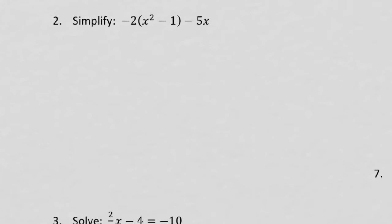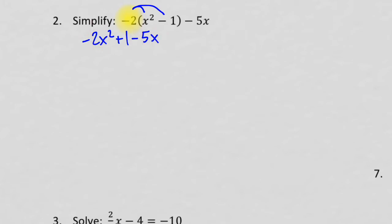Number two: same thing — distribute the negative 2 and then combine like terms. Negative 2 times x squared is negative 2x squared. Negative 2 times negative 1 is positive 1. Bring down the minus 5x. A common mistake is thinking x squared and x are like terms — they are not, because they don't have the same exponent. So you're done; that's your final answer.